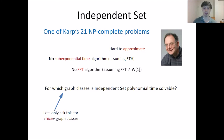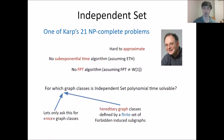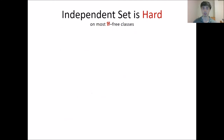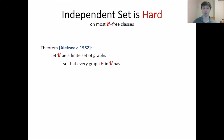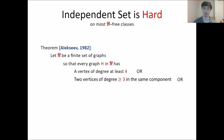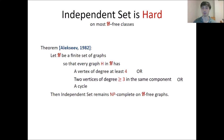Given these hardness results, we ask ourselves: for which graph classes is independent set polynomial time solvable? To give ourselves a reasonable chance, we only want to ask this for nice graph classes — in particular, hereditary graphs defined by a finite number of forbidden induced subgraphs. Independent set is known to remain hard on most H-free classes. Alexeev's theorem states precisely that if every graph H in a finite set has a vertex of degree at least 4, or two vertices of degree ≥ 3 in the same connected component, or a cycle, then independent set remains NP-complete on those H-free graphs.